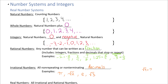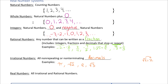Note that root 4 can be reduced to 2, so it is not irrational — root 4 equals 2, which is a natural number, a whole number, an integer, and a rational. Not all radicals are irrational, because some radicals reduce to whole numbers, so be careful of that.